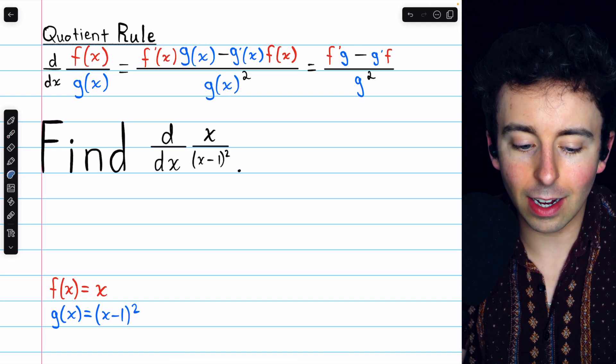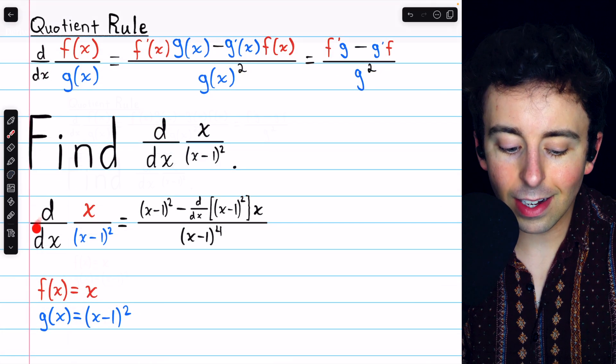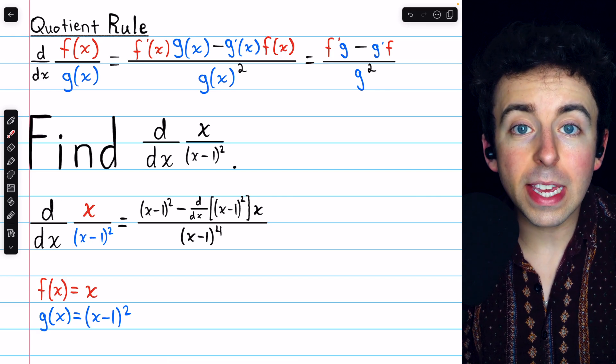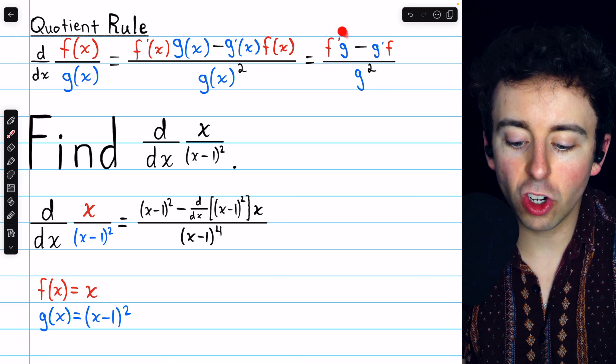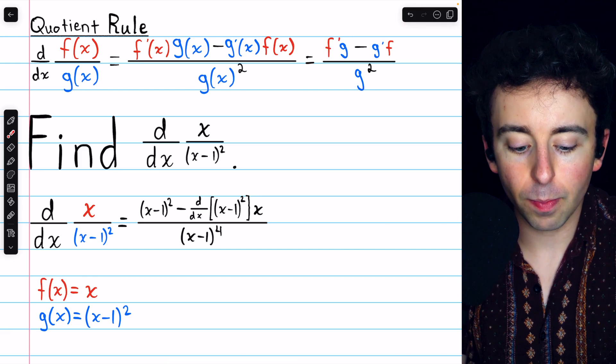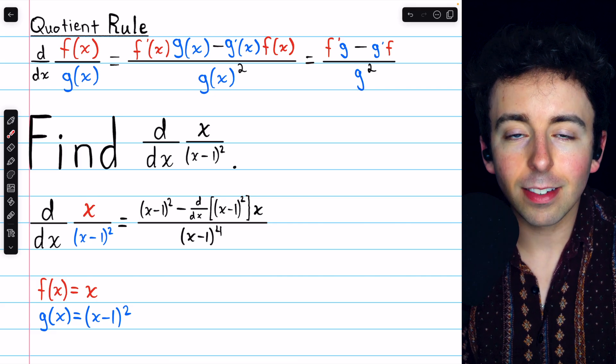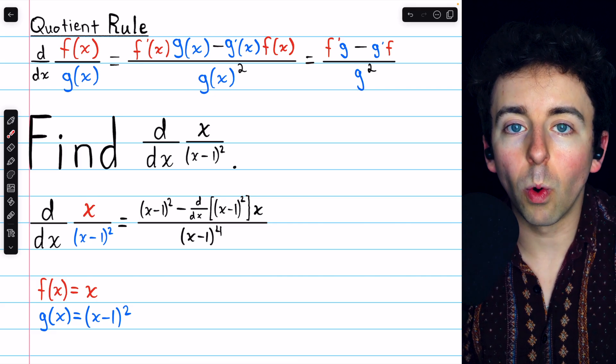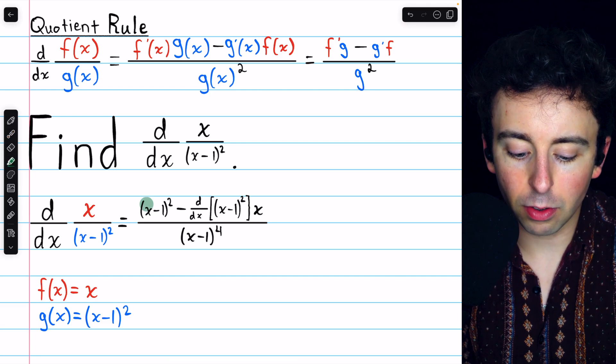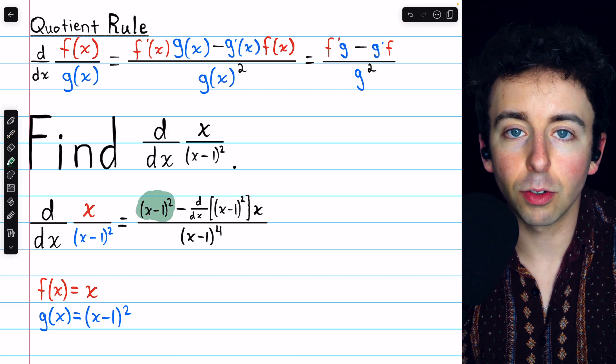So now we can go ahead and apply the quotient rule. To find the derivative of x divided by x minus 1 squared, we begin with f prime g. That's the derivative of the numerator multiplied by the denominator. The numerator is x, and its derivative is 1. Multiply that by the denominator, and we get our first term here, just x minus 1 squared.